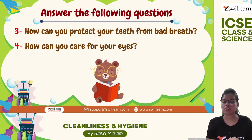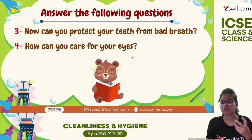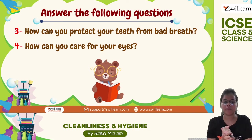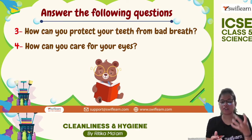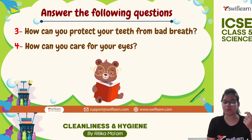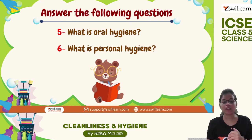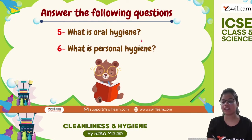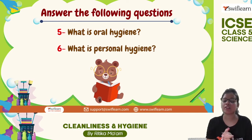How can you protect your teeth from bad breath? By brushing regularly and rinsing your mouth after every meal. For eye care: wash your eyes regularly but do not rub them — wash with very gentle hands. Oral hygiene means taking care of our mouth — teeth, gums, and tongue. Personal hygiene means taking care of our whole body's cleanliness, staying clean and fresh.